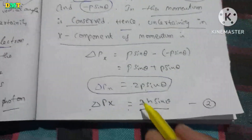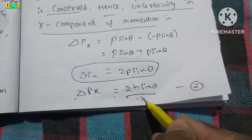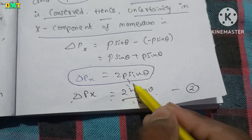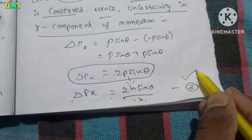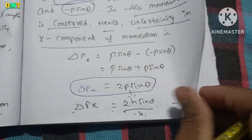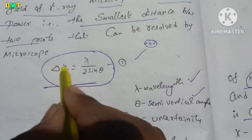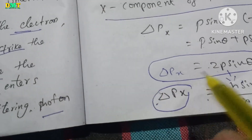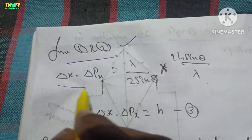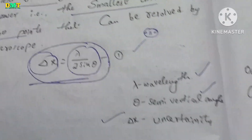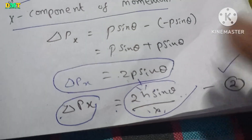P is equal to h by lambda. So delta Px = 2 times (h/lambda) sin theta. This is equation 2. From equations 1 and 2, multiplying left-hand sides: delta x into delta Px equals (lambda / 2 sin theta) times (2h sin theta / lambda).